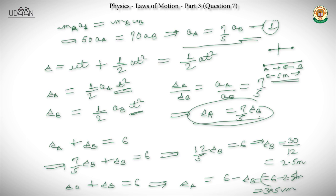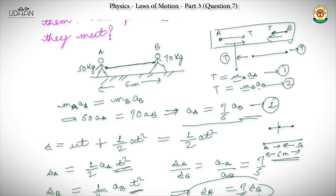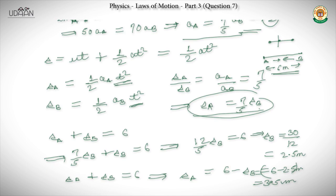We equated the two acceleration equations to get the first relation between accelerations and hence distances. Then we added the distances to the given total of 6 meters to get the answer. The lighter skater A travels more distance, and the heavier skater B travels less.